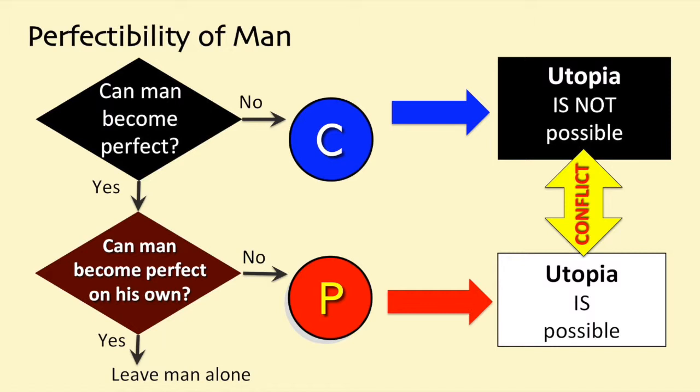Conservatives believe that utopia is not possible because man is not perfect nor perfectible. Conservatives feel that any attempt at social control and re-education, even for a good and worthy goal, is a bad thing for the liberty of the people. Where do you stand? How perfect are you? Do you think that utopia — a society of perfect equality where equality of outcome rather than equality of opportunity — is desirable or possible? Is liberty possible in utopia? Which is more important, utopia or liberty? What are you willing to sacrifice for utopia?